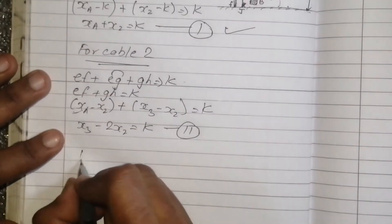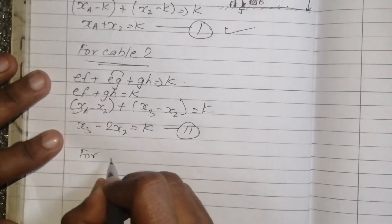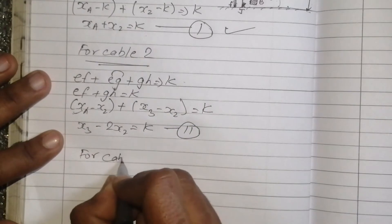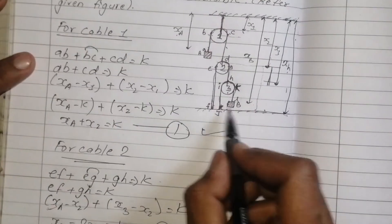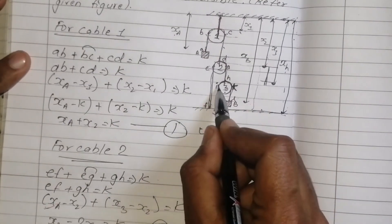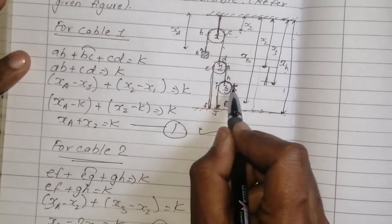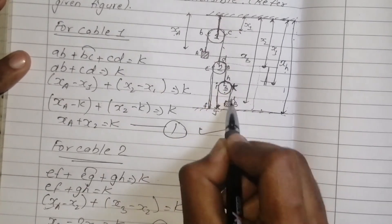x3 minus 2x2 is equal to constant k. For k3, k3 is equal to constant k.